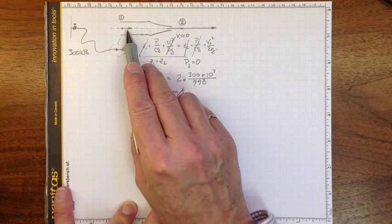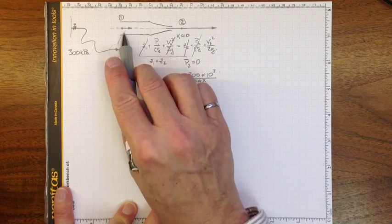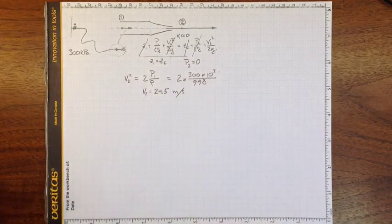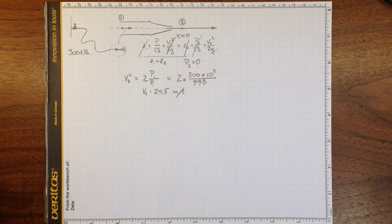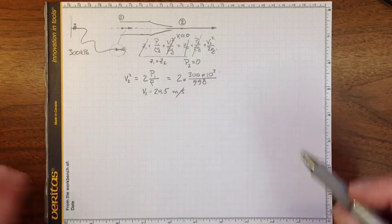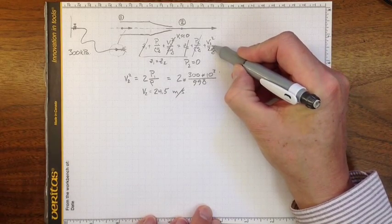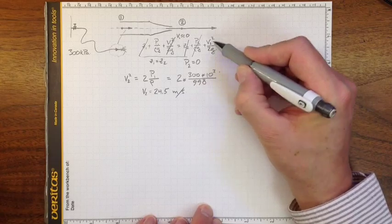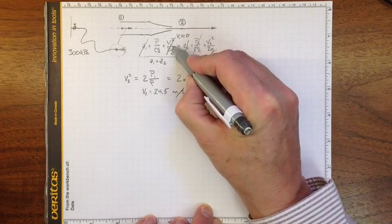Now 16 squared is quite a large number, 256. So this term here, this V2 term, is 256 times as big as that term.